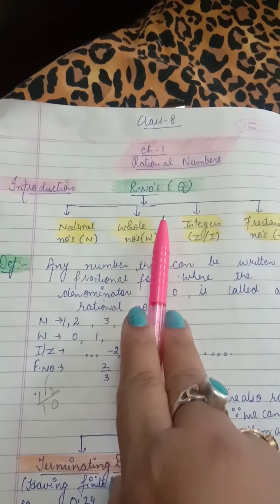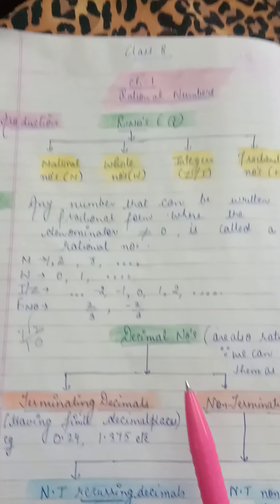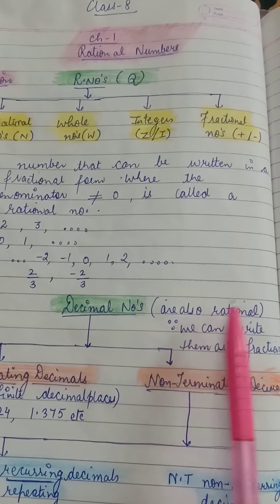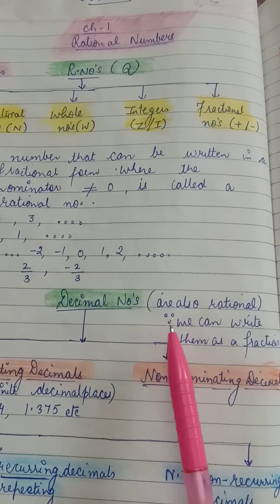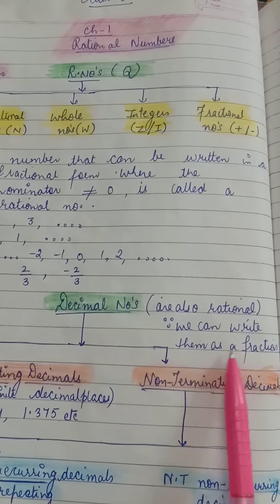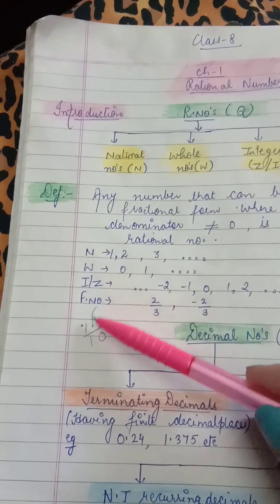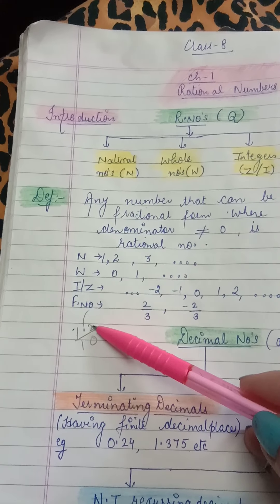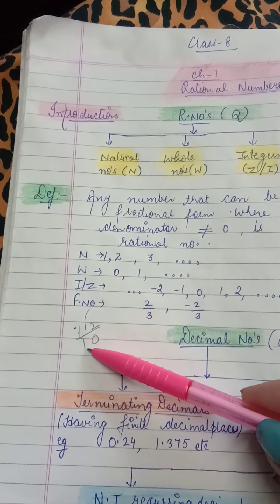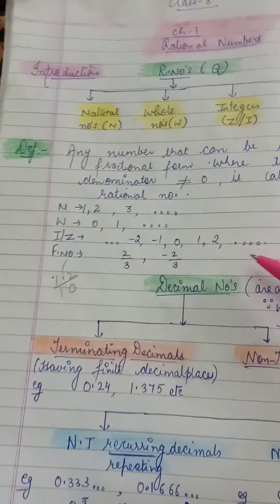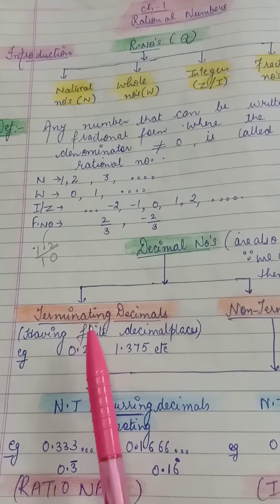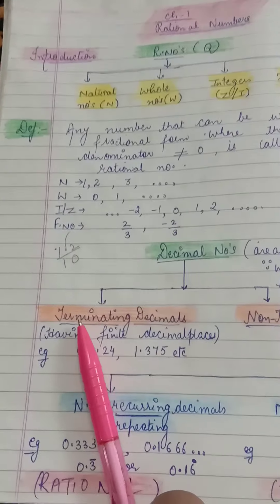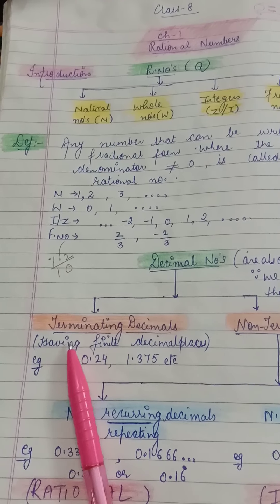Decimal numbers are also rational numbers because we can write them as a fraction. For example, take the decimal number 1.2 — remove the decimal. After the decimal there was one digit, so put one zero in the denominator, giving 12 upon 10, which is a fraction. Decimal numbers are of two types: terminating decimals and non-terminating decimals.